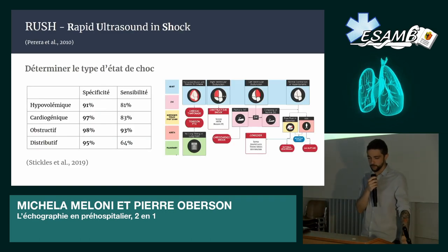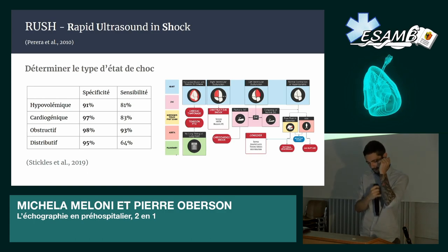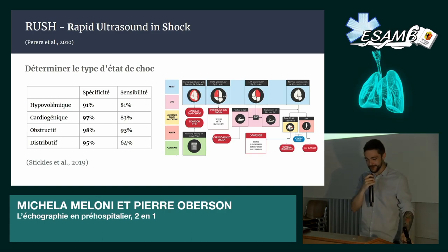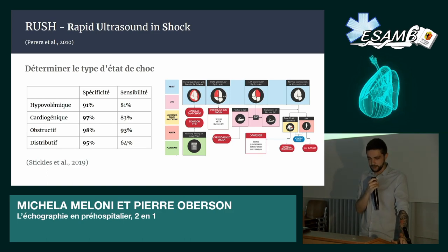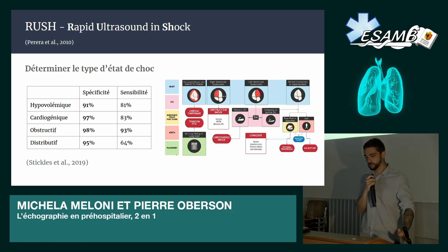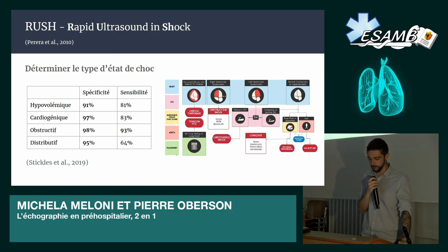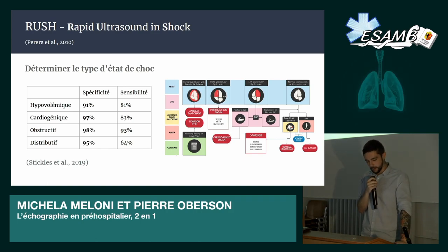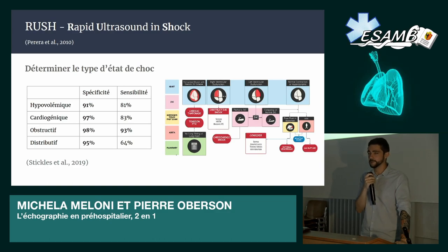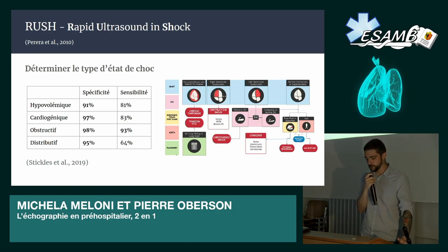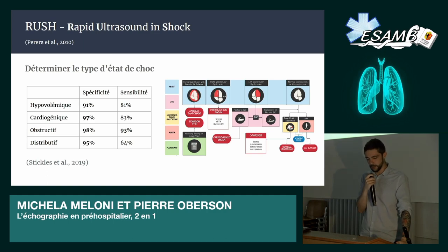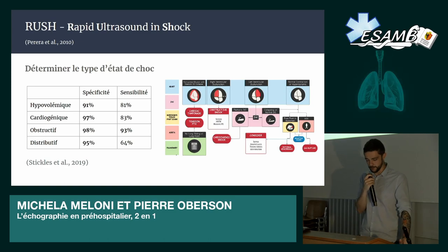Maintenant qu'on quitte le monde du trauma, on a d'autres types d'état de choc — il n'y a pas que les polytraumatisés qui sont en état de choc. Le protocole RUSH, c'est un protocole qui est particulièrement long : il a près d'une dizaine de minutes de réalisation quand c'est un utilisateur expérimenté. Il y a la possibilité d'utiliser un algorithme, comme vous voyez à l'écran, qui permet de réduire le temps de réalisation. C'est un protocole qui a une forte spécificité pour déterminer le type d'état de choc.